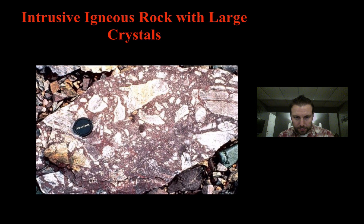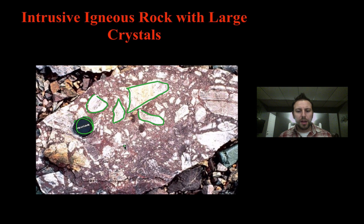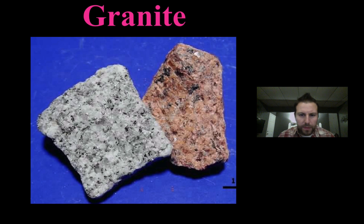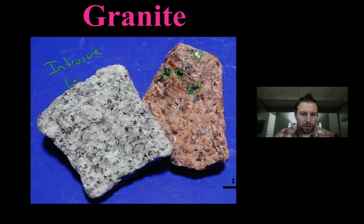Here you can see a camera lens cap for scale — these are large crystals scattered throughout this rock. This is granite, an intrusive igneous rock. We can readily make out the larger crystals throughout. Granite forms inside the earth and is identified by its large crystal structure.